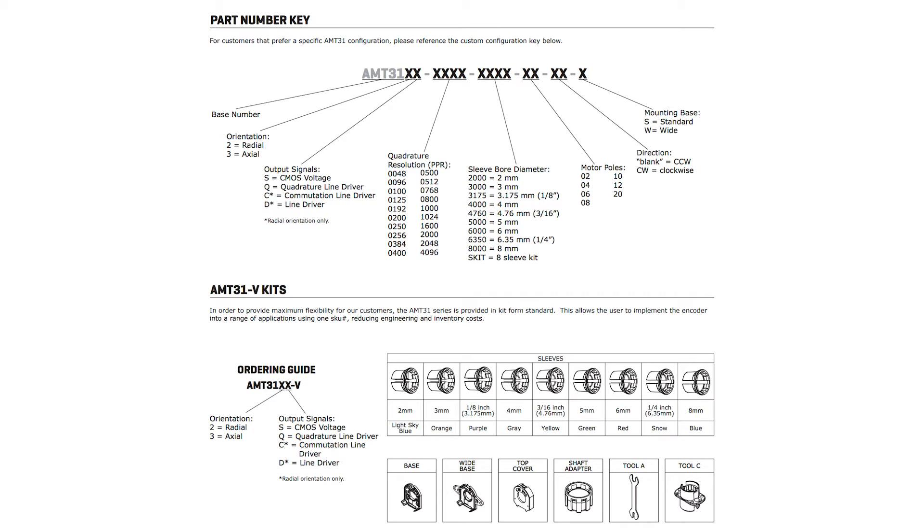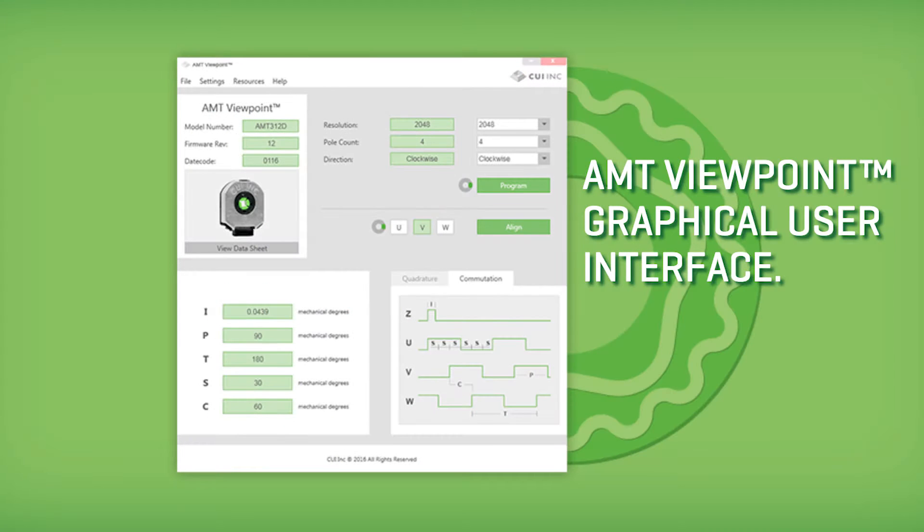Featuring three-phase UVW commutation signals, the AMT31 series output can accommodate brushless DC motors with 2 to 20 poles, programmable via CUI's AMT Viewpoint graphical user interface.